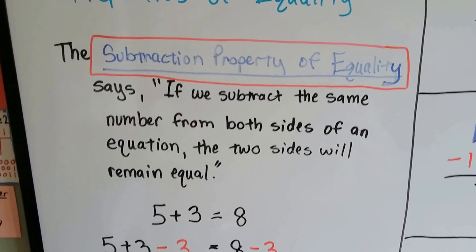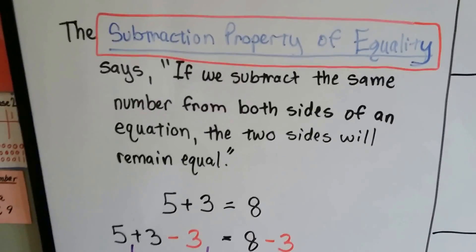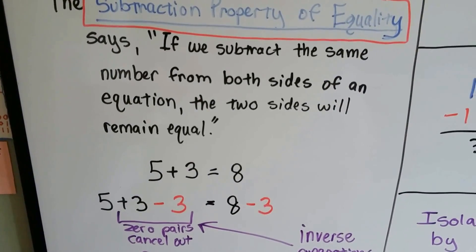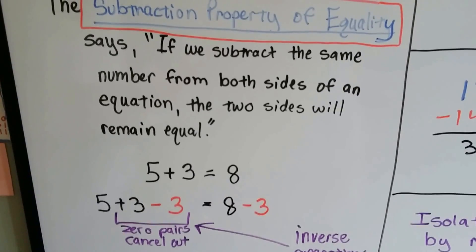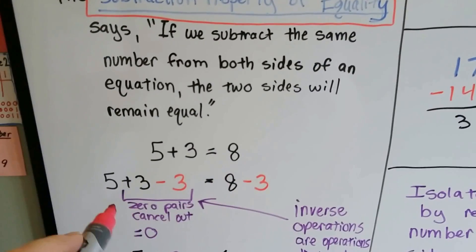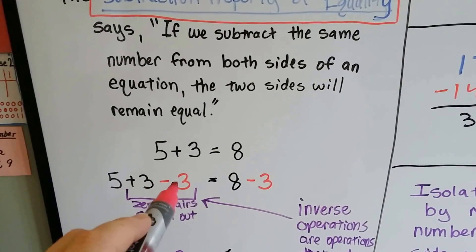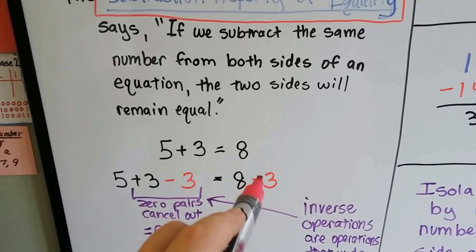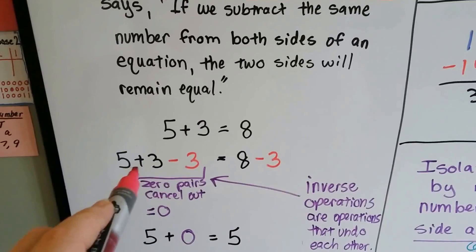The subtraction property of equality says, if we subtract the same number from both sides of an equation, the two sides will remain equal. So if we have 5 plus 3 equals 8, and we subtract a 3 because it's got the plus 3, and then we subtract 3 from this side,